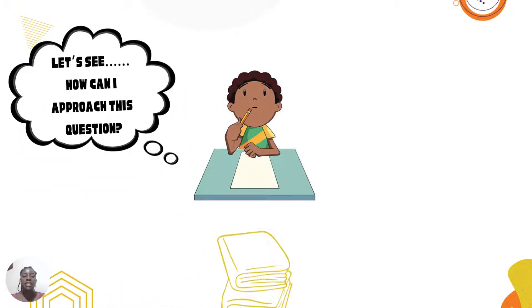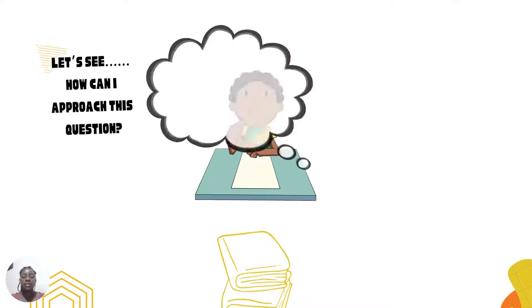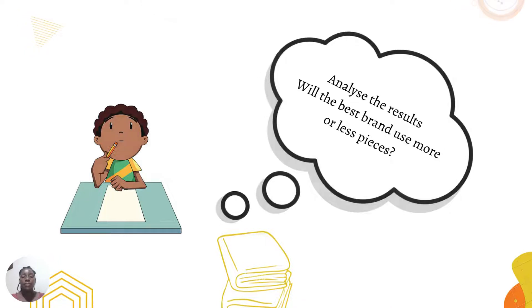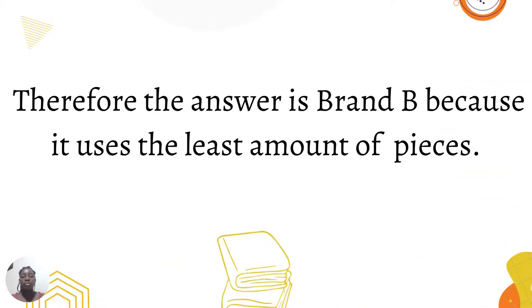Before we look at the answer, let's see how we can approach this question. We're going to analyze the results from the table and determine which brand would be best based on whether it used more or less pieces of paper. Therefore, the answer is brand B because it uses the least amount of pieces.